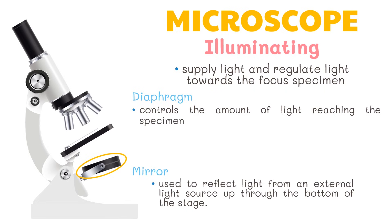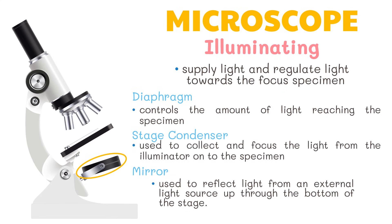The diaphragm is located above the condenser and below the stage. Also not seen in the picture is the stage condenser. It is used to collect and focus the light from the illuminator onto the specimen. It is located under the stage, often in conjunction with an iris diaphragm.